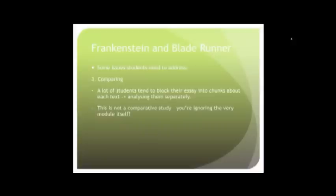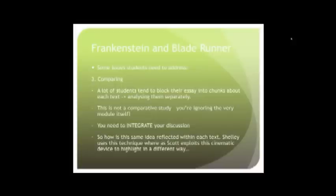This is, I should say, this is a comparative study. You're ignoring the very module itself by not comparing the two texts. You need to integrate your discussion. So Frankenstein and Blade Runner, as I said, the ideas are similarly within each text. So how does this same idea reflect within each text? So Shelley uses this technique whereas Scott exploits this cinematic device to highlight such and such in a different way or in a similar way.